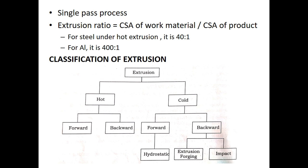Next is the classification of extrusion. The figure shows the classification of the extrusion process. Extrusion can generally be classified into hot and cold extrusion. Hot extrusion itself can be classified into forward and backward extrusion. Similarly for cold extrusion — forward and backward. In the case of cold extrusion, the forward extrusion is called hydrostatic extrusion, whereas backward extrusion can be further subdivided into extrusion forging and impact extrusion.